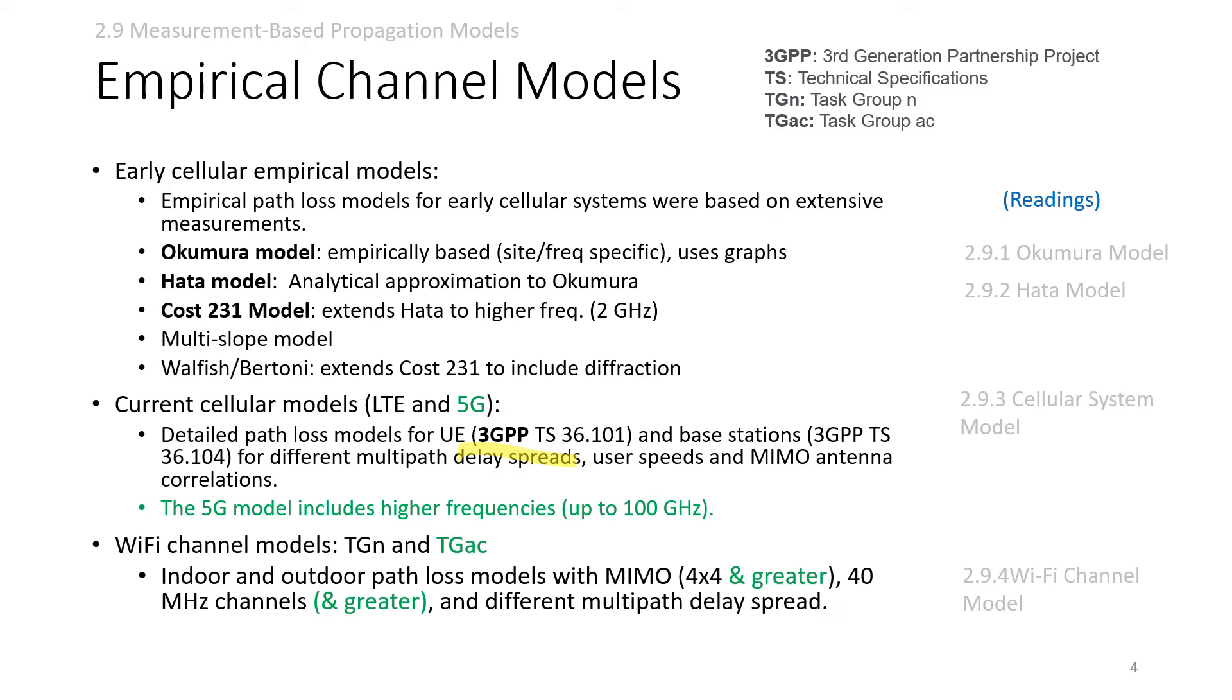For WiFi, channel models TGn and TGac—Task Group n or ac—come up with standards. Indoor and outdoor path loss models with MIMO 4x4 or greater, 40 MHz channels and greater. Those models account for different delay spreads. Models get developed with applications. For reading, use the 2020 draft by Andrea Goldsmith to build knowledge on standards and models used.